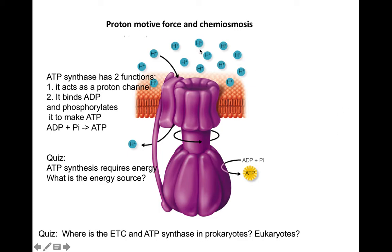The proton motive force: the proton gradient across the membrane acts as potential energy, a battery. As protons flow through, ATP synthase actually rotates in space, and that proton flow provides the energy to drive synthesis of ATP.